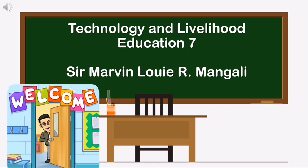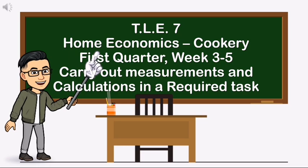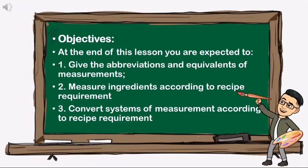Good day class! This is Technology and Livelihood Education 7. I am Teacher Marvin Louie Mangley. Welcome to my class. This is Cookery class, First Quarter, Week 3 to 5. Our topic is 'Carry Out Measurements and Calculations in a Required Task.' Objectives: at the end of this lesson you are expected to give the abbreviations and equivalences of measurements, measure ingredients according to recipe requirement, and convert systems of measurement.